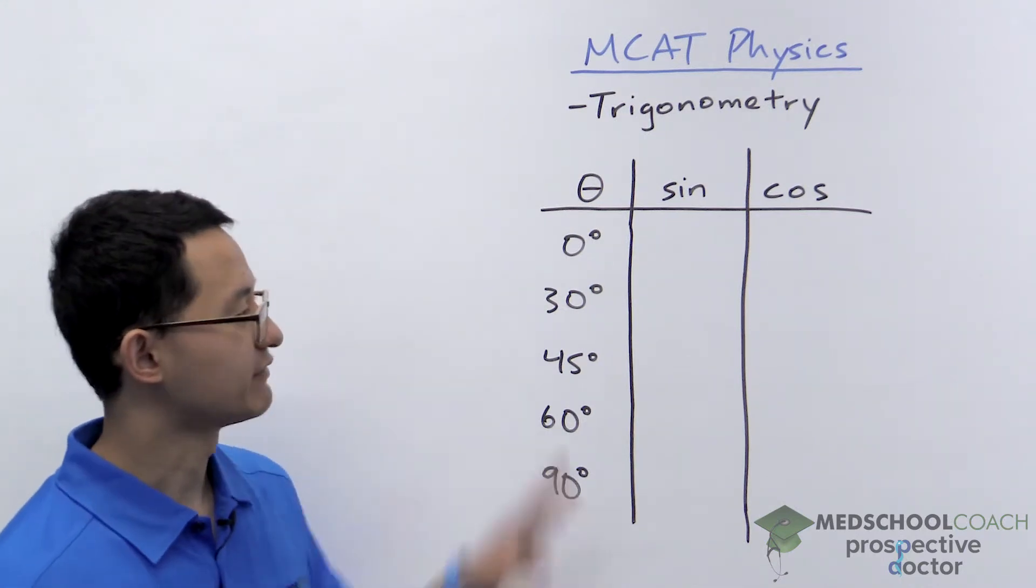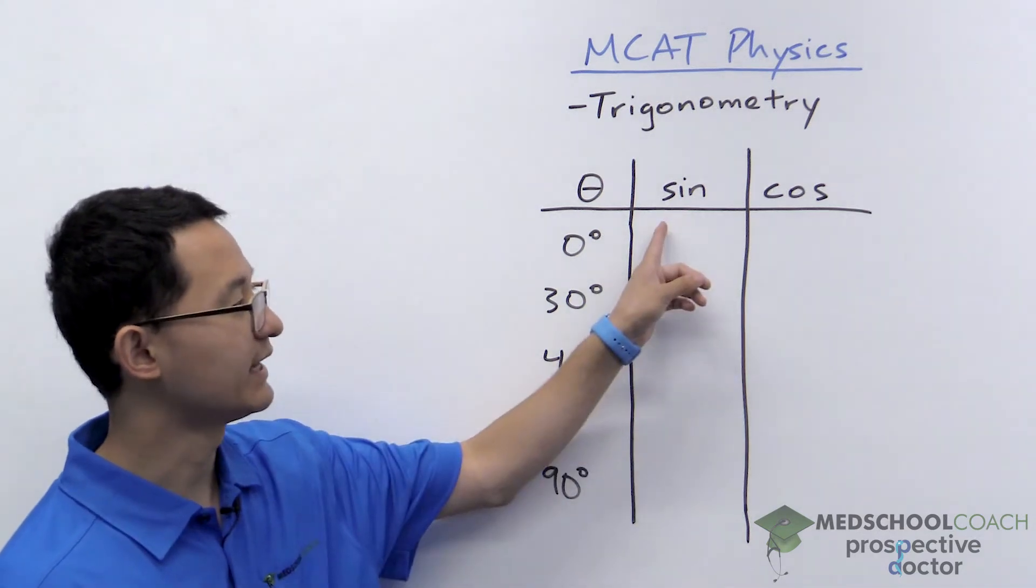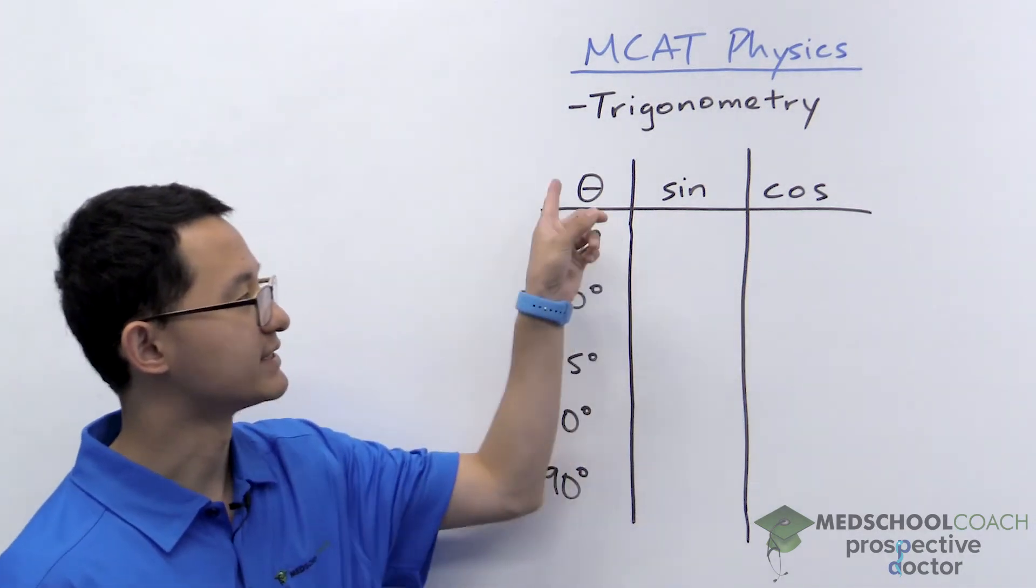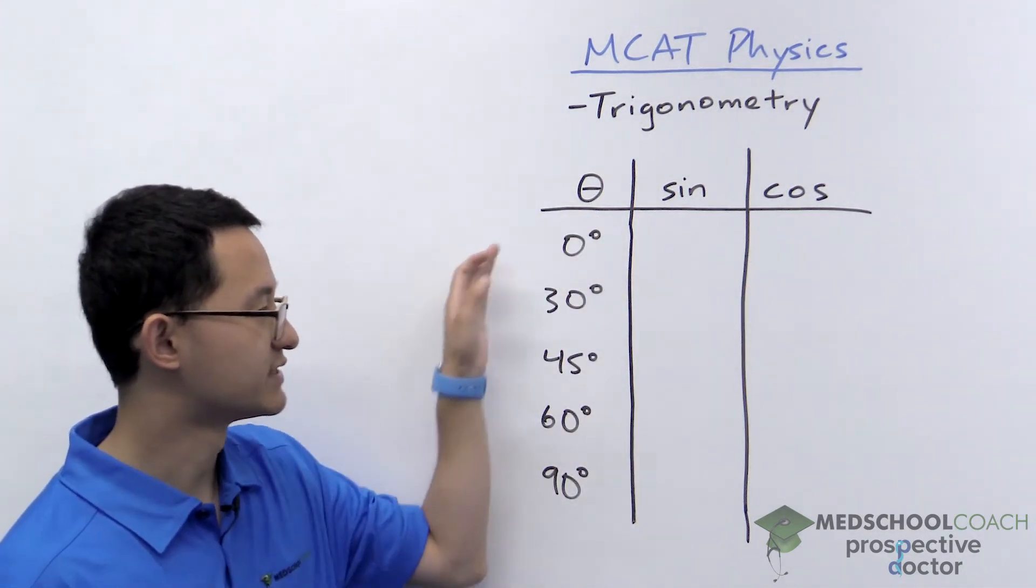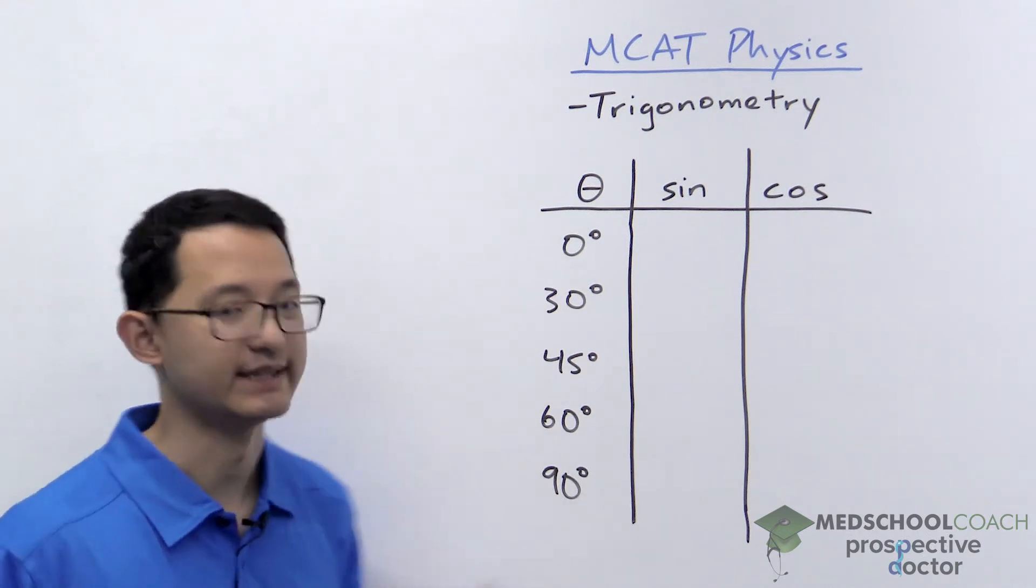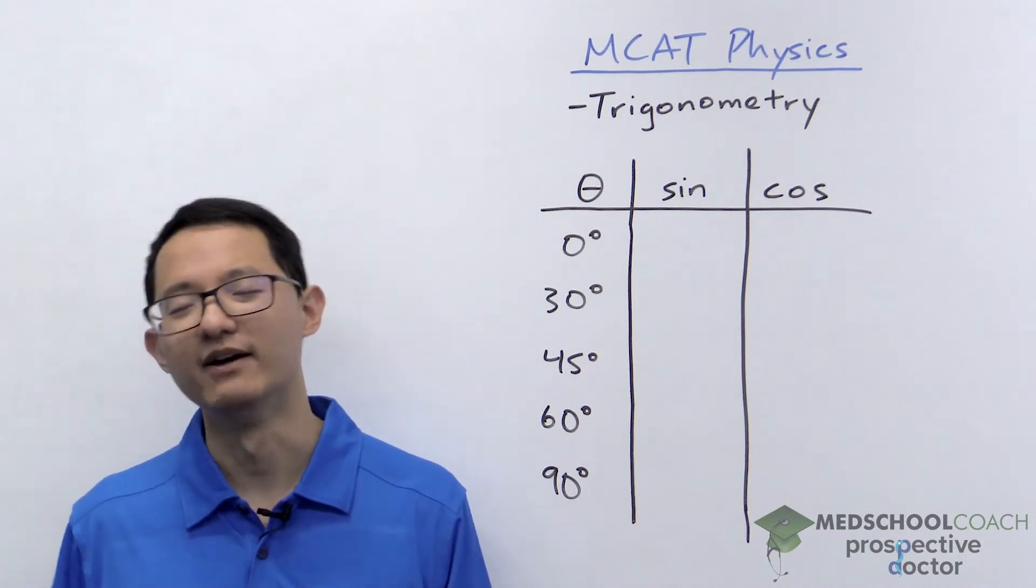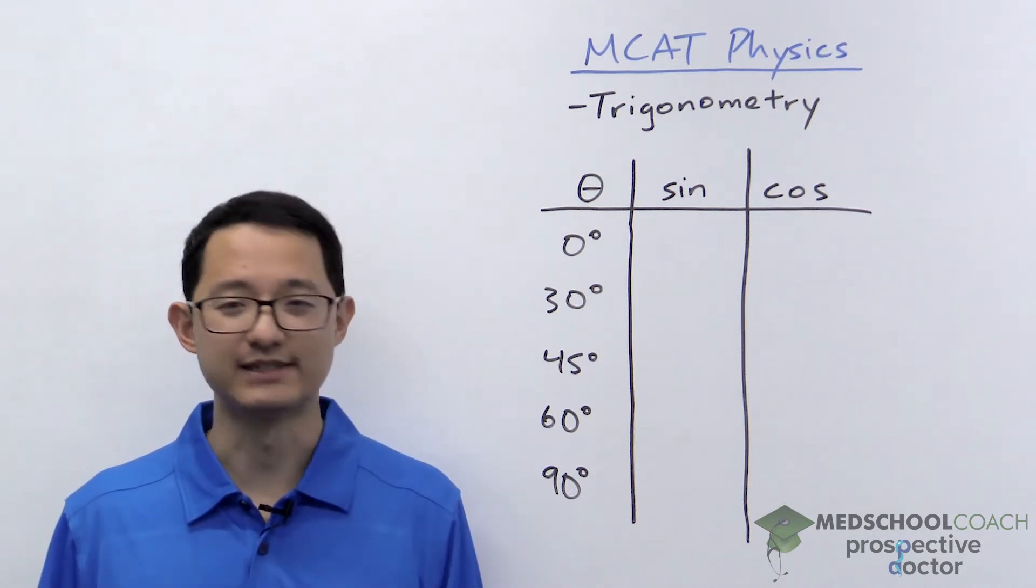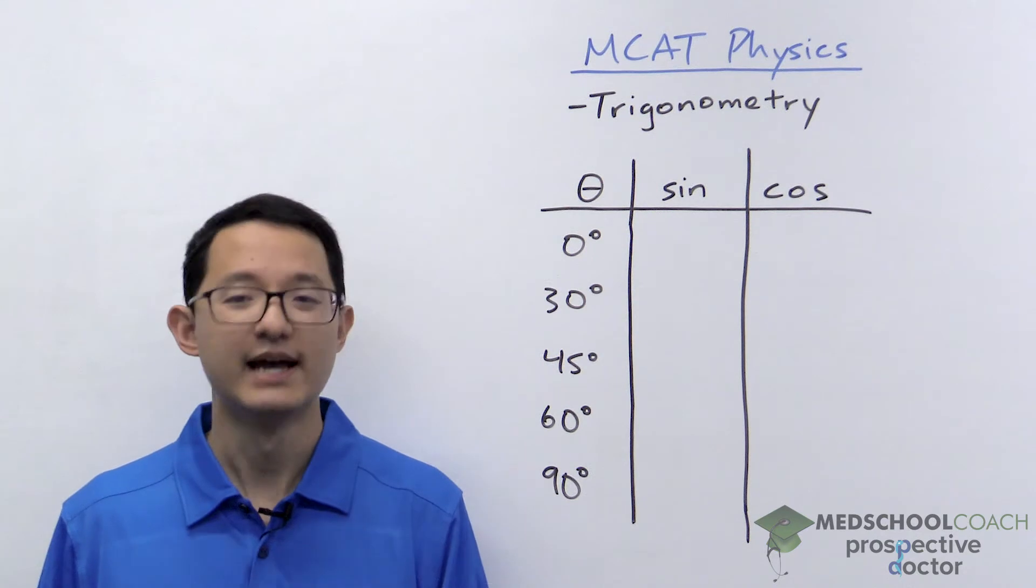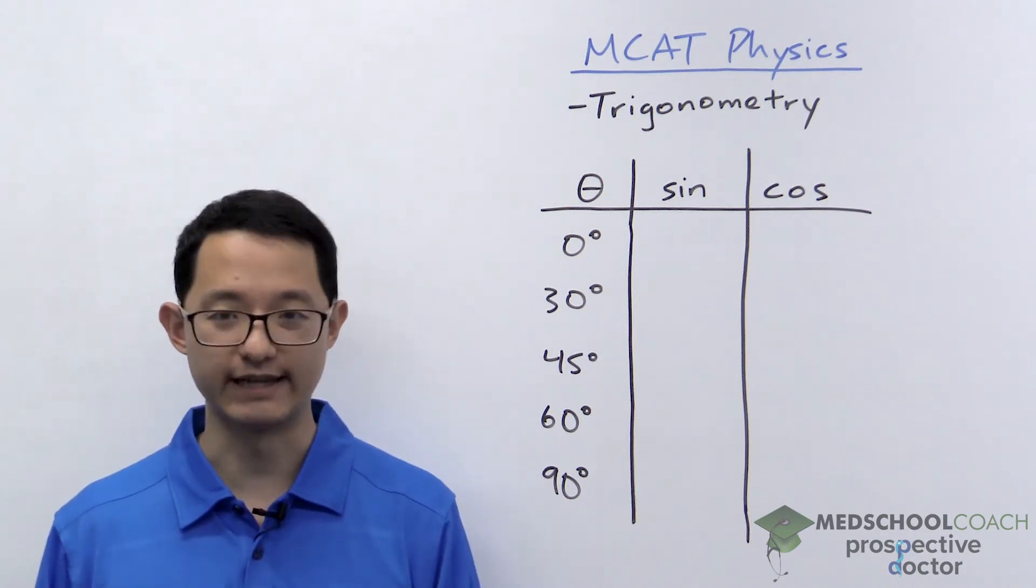So here you can see we've got a table where we've got sine and cosine for these different thetas, different angles of 0, 30, 45, 60, and 90. And these are the main angles that you need to know for the exam. You don't have to worry about what is sine of 13 degrees or cosine of 47 degrees. The MCAT doesn't give you those weird angles.